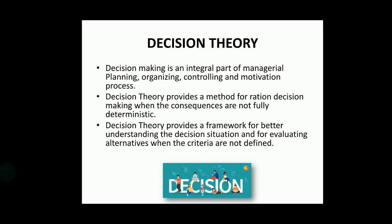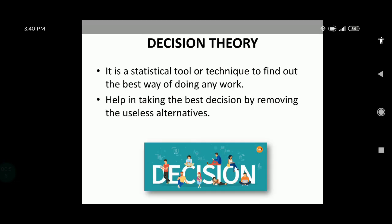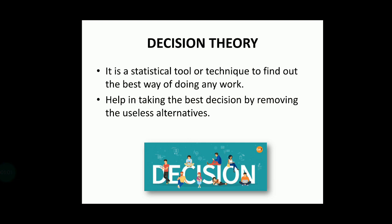Decision theory is all about how you take decisions when the environment is ambiguous and not at all deterministic — when you are not sure what the end result will be. It is a statistical tool or technique to find out the best way of doing any work, taking the best decisions and eliminating unwanted or useless alternatives. In one sense, decision theory is about finding the optimal way of doing any work.